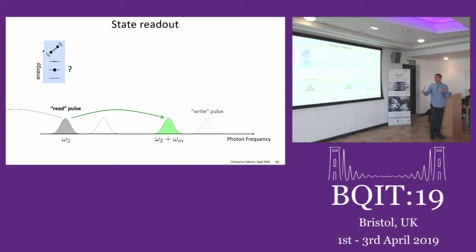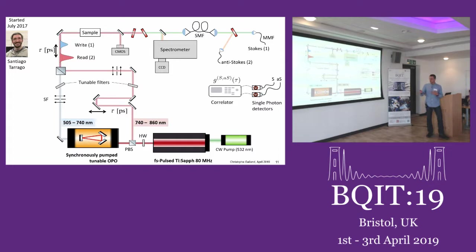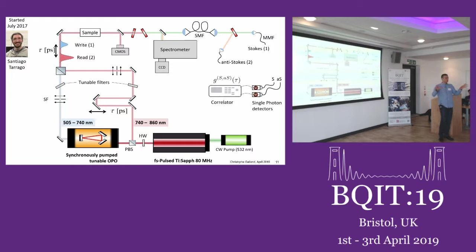When you do this, you can map out the state of the phonon on the anti-Stokes photon. To summarize, this is the setup we built with my first student Santiago, who did most of these experiments. We have a mode-locked laser pumping an OPO which is frequency doubled, giving us the write and read pulses that can be delayed. We use a bunch of tunable filters so that we have full flexibility on the wavelengths, and the beam goes through the sample. We can check on a spectrometer.